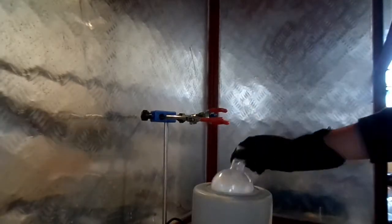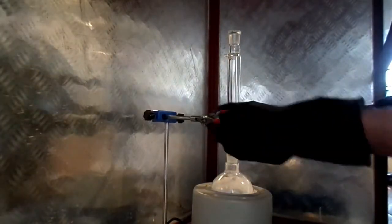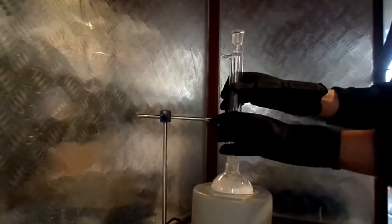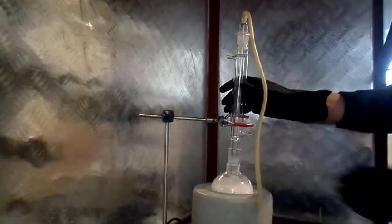I then place the round bottom flask into a heating mantel as well as a Liebig condenser and connect it to a simple gas bubbler. I set up a gas trap of hydrochloric acid in order to neutralize any escaping ammonia fumes.